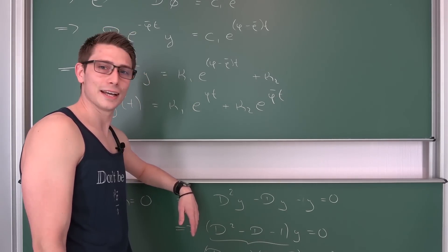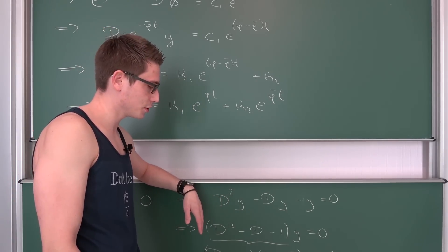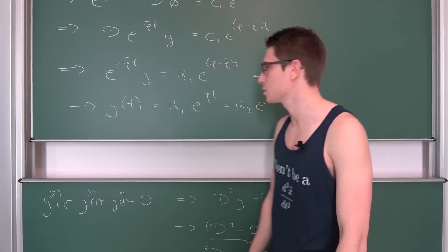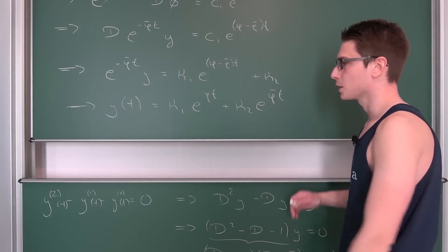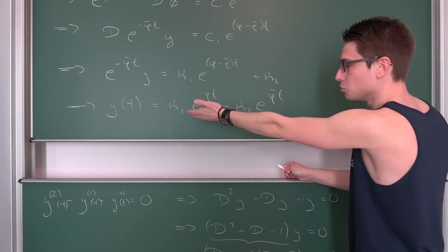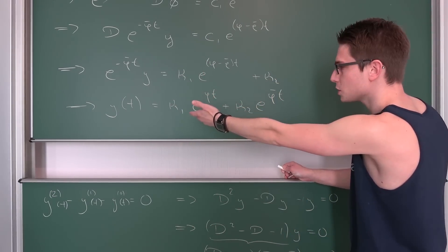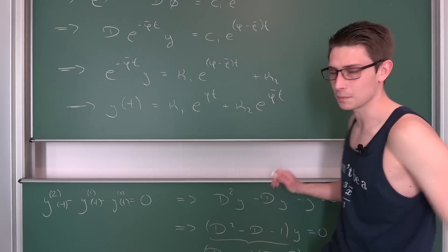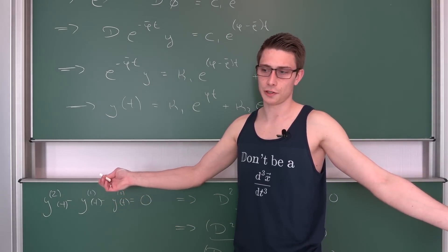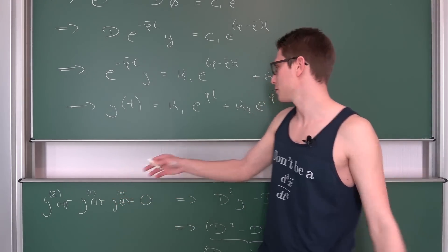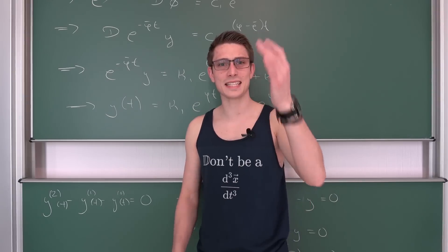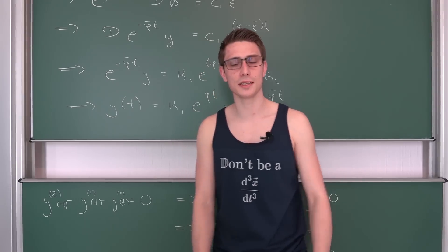y(t) equals κ₁ · e^(φt) plus κ₂ · e^(φ̄t). That's the solution to our differential equation — the most general solution. It's a complete solution to our linear homogeneous second order ordinary differential equation. And you can get to the same point using an ansatz: some constant times e to the first root times t plus another constant times e to the second root times t, and they are already linearly independent.